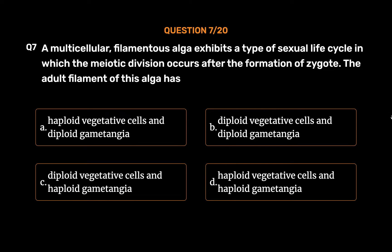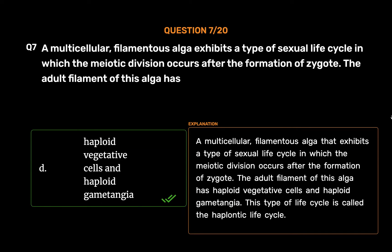The correct answer is Option D: Haploid vegetative cells and haploid gametangia. A multicellular, filamentous alga that exhibits a type of sexual life cycle in which the meiotic division occurs after the formation of zygote has haploid vegetative cells and haploid gametangia. This type of life cycle is called the haplontic life cycle.